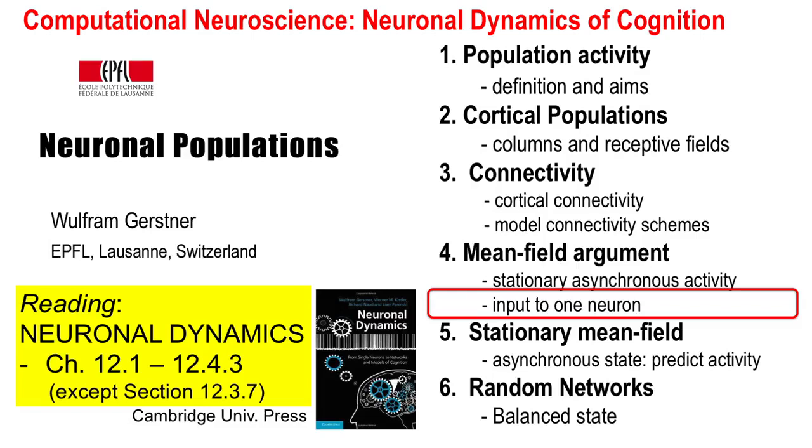Welcome back to the class Computational Neuroscience, Neuronal Dynamics of Cognition. In the previous section, we defined the notion of asynchronous stationary activity. Let us now look at the input to a single neuron during such a state. The population activity plays an important role. From a mathematical perspective, this part introduces the first steps of a mean field argument.